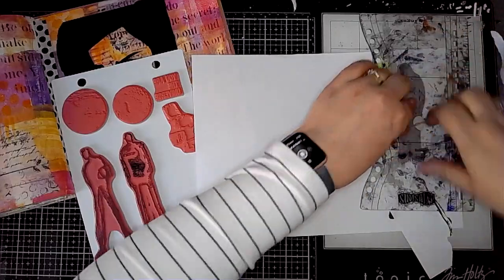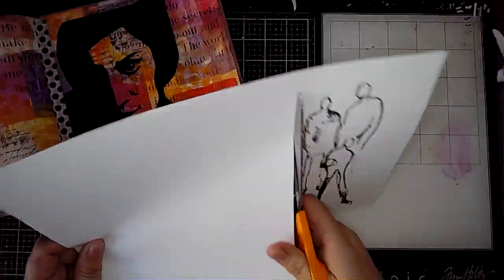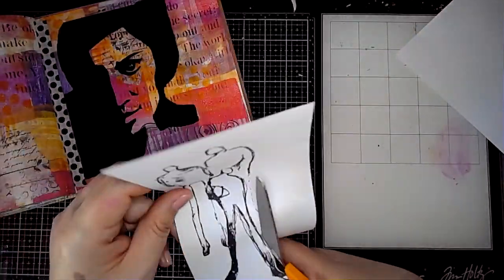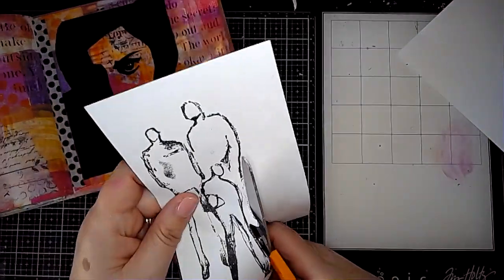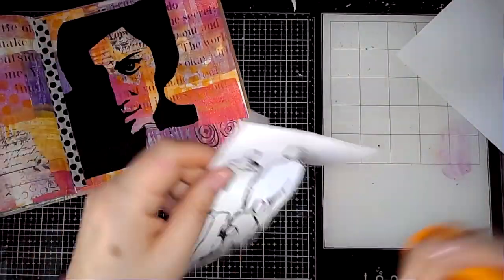But I guess you can see what I'm doing there, even if I've not explained it very well. So this is just ordinary printer paper, it's not card. I quite often just use that when I'm stamping images out, it makes it easier to stick down.